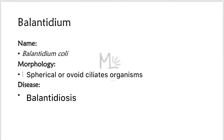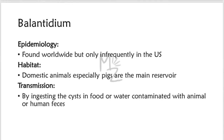Balantidium. Its full name is Balantidium coli. Its morphology is that it is a spherical, ovoid, large ciliated organism responsible for balantidiosis. Epidemiology: Balantidium is found worldwide, but only infrequently in the United States. Habitat: Domestic animals, especially pigs, are the main reservoir. Transmission occurs by ingesting cysts in food or water contaminated with animal or human feces.